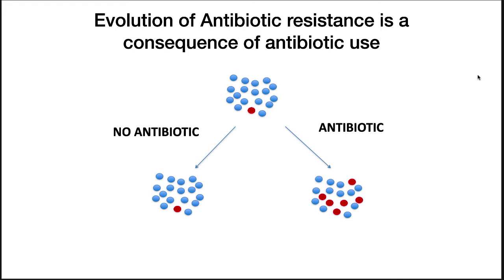Because it puts a selective pressure on the microorganisms. If you have a population of microorganisms and a pathogen that causes disease, without inappropriate antibiotic use the number of resistant organisms stays reasonably low. If you increase the use of antibiotics, this selects for the antibiotic-resistant strain and increases its number in the population. Eventually, all of these pathogens will become resistant to an antibiotic if it's overused.